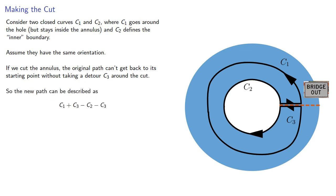So the new path can be described as C₁ + C₃ - C₂ - C₃, where we subtract the portions where we're traveling in the opposite direction.